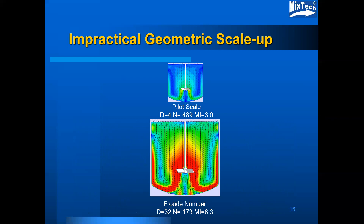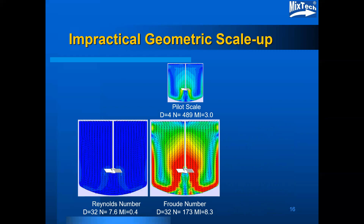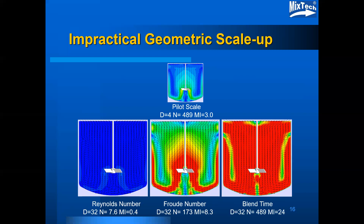For impractical geometrically similar scale-up cases, a Froude number scale-up gives a large scale rotational speed of 173 RPM rather than 122 for power per volume, resulting in a mixing index of 8.3 scaled up from a pilot scale mixing index of 3.0. A Reynolds number scale-up results in a ridiculously low rotational speed with no apparent significant velocities in the CFD model, and a mixing index of 0.4 — less than 1 — indicating it probably isn't sufficient to move the liquid. With equal blend time scale-up, the large scale speed equals the small scale speed, producing large regions of high velocity in the CFD model and a mixing index of 24, which indicates this is probably never practical for an industrial application.